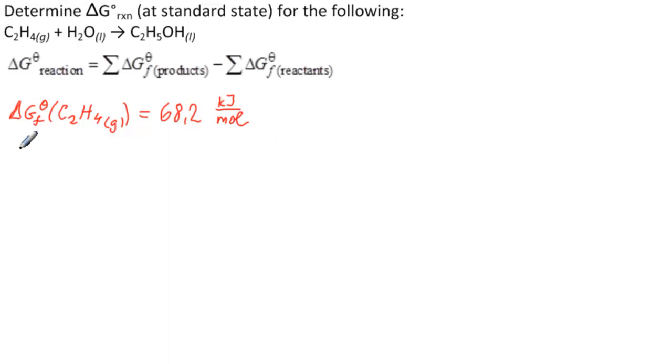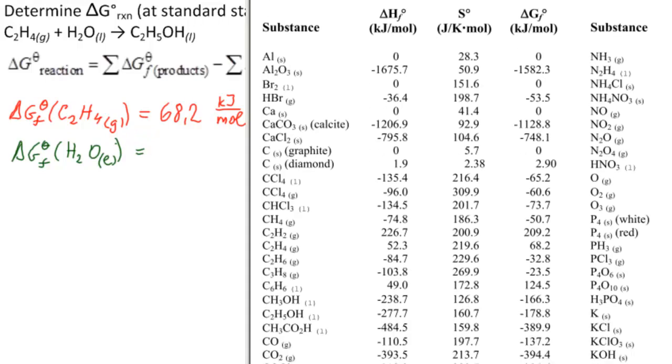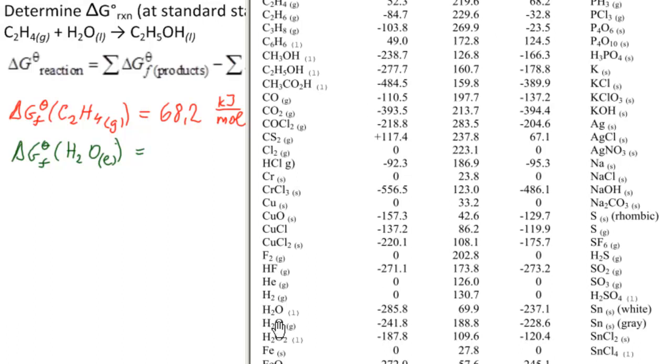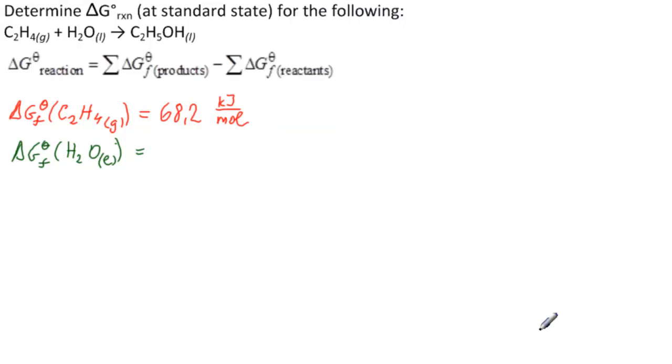Now, we want ΔG° of formation of H2O liquid. Back to our table. We need to scroll down. There it comes. H2O liquid: minus 237.1 kilojoules per mole.